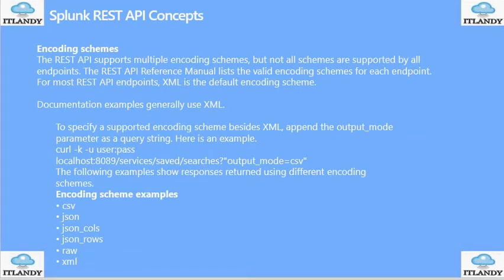Regarding encoding schemes: the API supports multiple encoding schemes, but not all schemes are supported by every endpoint. The API reference manual lists all the codes. The supported schemes include CSV, JSON, JSON columns, JSON rows, row, raw data, and XML.